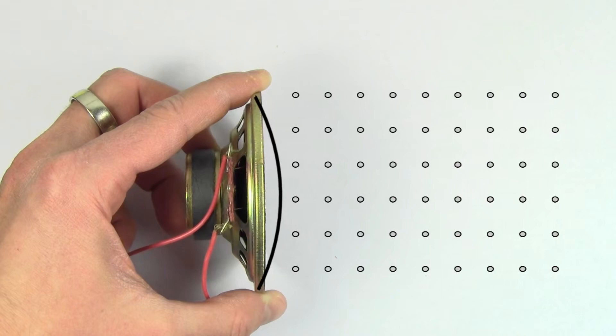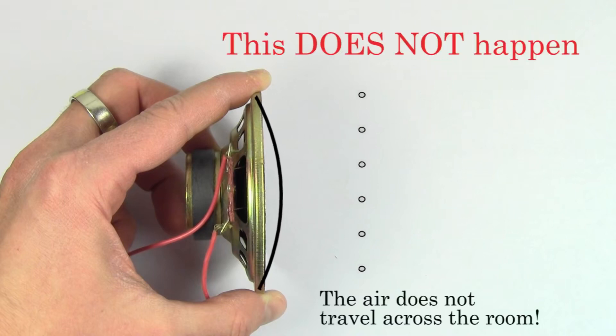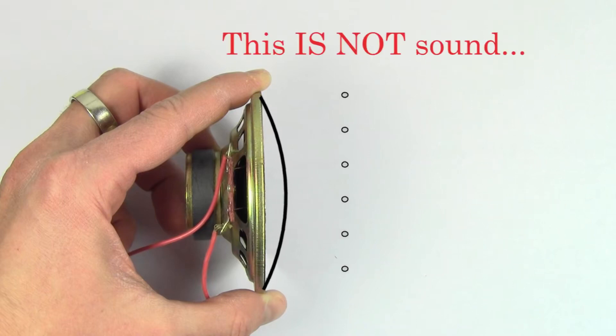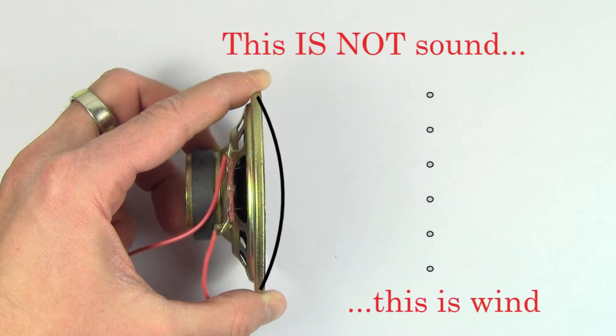This is an important enough fact for me to state again. Energy is traveling across the room here, but air itself is not traveling across the room. Only the disturbance within the air is traveling across the room. If air were being transported across the room, it'd be better characterized not as sound, but as wind.